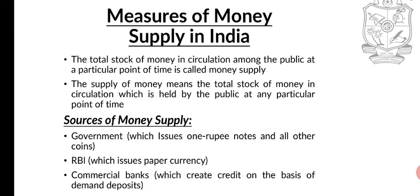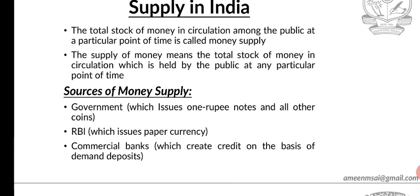Now let's look at the sources of money supply. The first source is the government, which issues one rupee notes and all other coins. The second source is the RBI — Reserve Bank of India — which issues all paper currency except the one rupee note. The third source is commercial banks, which create credit on the basis of demand deposits.